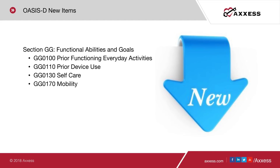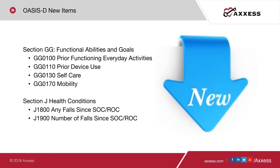As mentioned in the last webinar, in part one, there are six new items in the OASIS-D. Four of those items are in the section GG functional abilities and goals. We're looking at prior functioning of everyday activities, prior device use, self-care, and lastly, mobility.